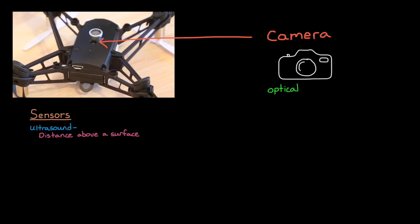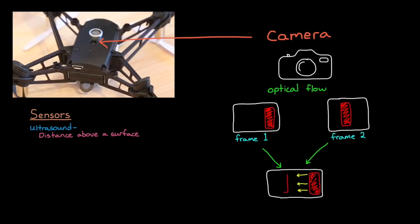The other sensor is a camera. It's taking images at 60 frames per second and using an image processing technique called optical flow to determine how objects are moving between one frame and the next. From this apparent motion, the mini drone can estimate horizontal motion and speed.